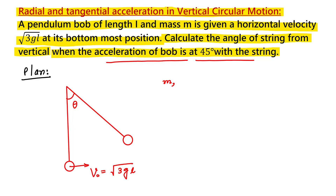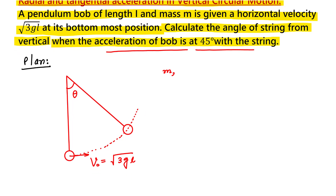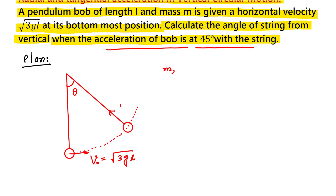This bob is moving in a circle. When something moves in a circle, there are two components of acceleration. One component is along the radial direction — this is AR — and another component is in the tangential direction. You can have a resultant acceleration from these two. The question says the acceleration of the bob is at 45 degrees with the string, so this angle is 45 degrees.